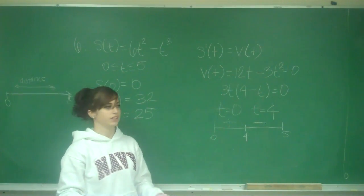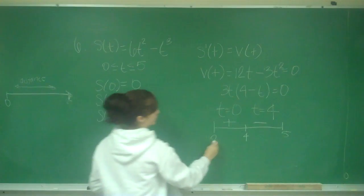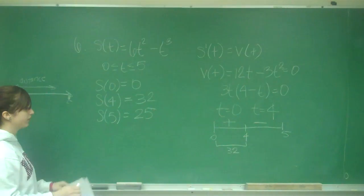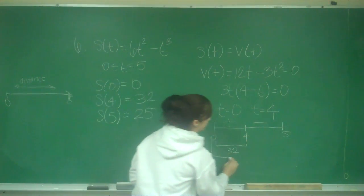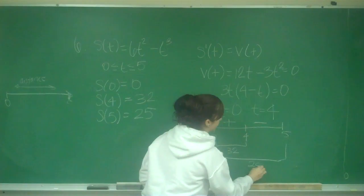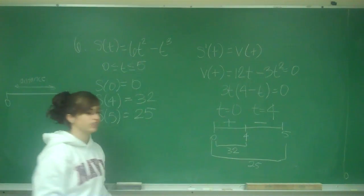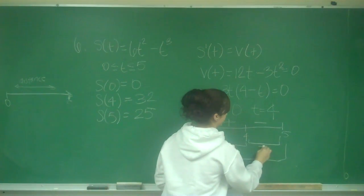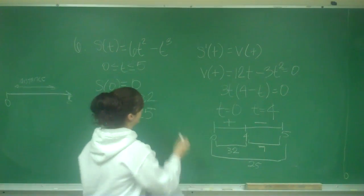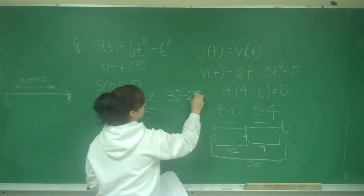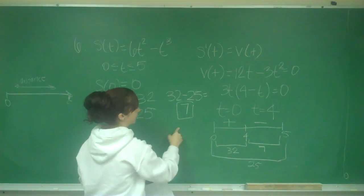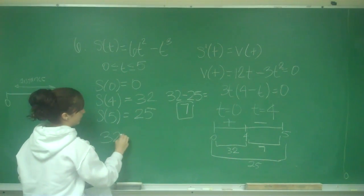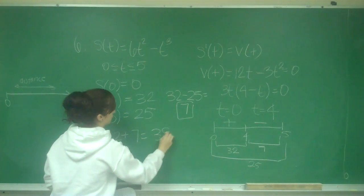So now I have these values, so it's like what do I do with them? So from 0 to 4, he traveled 32. And then from 0 to 5, he traveled 25. Because here he was going in the negative direction. So we think what would be from 4 to 5 has to be 7, because 32 minus 25 is 7. So from here to here, it's 7. So we need to add the total distance. So we do 32 plus 7, which is 39.